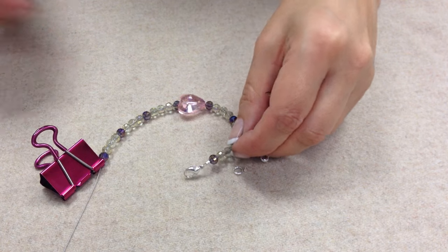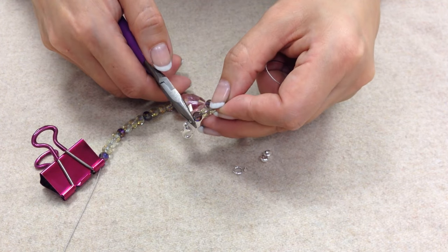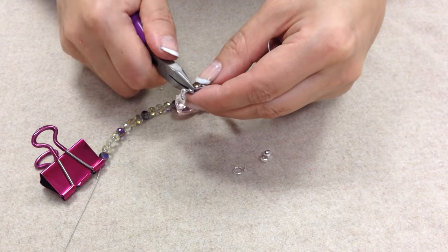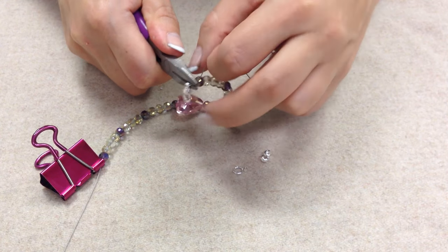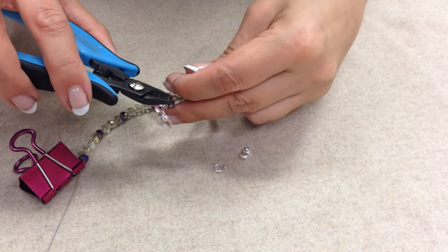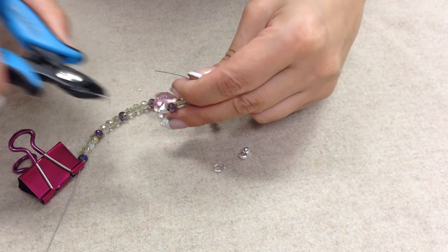Next, take a pair of flat nose pliers and press the crimp tube together. You can also use crimping pliers to do this, which makes sure that the crimp is tightly in place. Use your wire cutters to cut the excess beading wire.